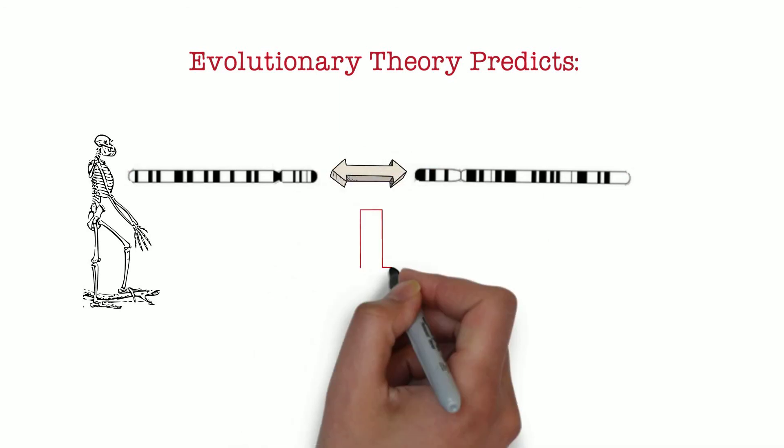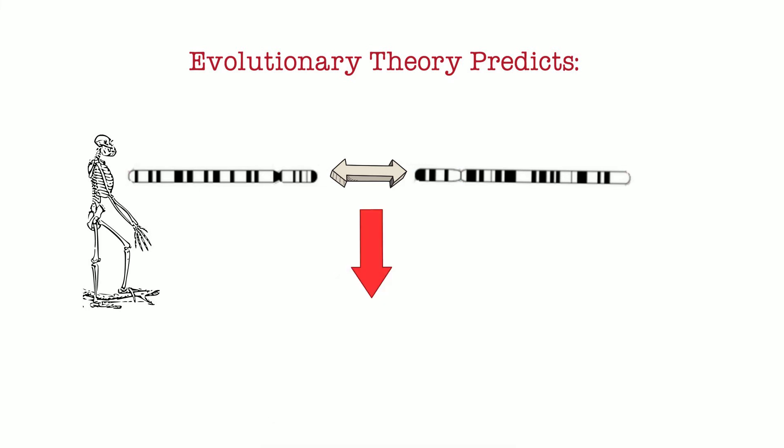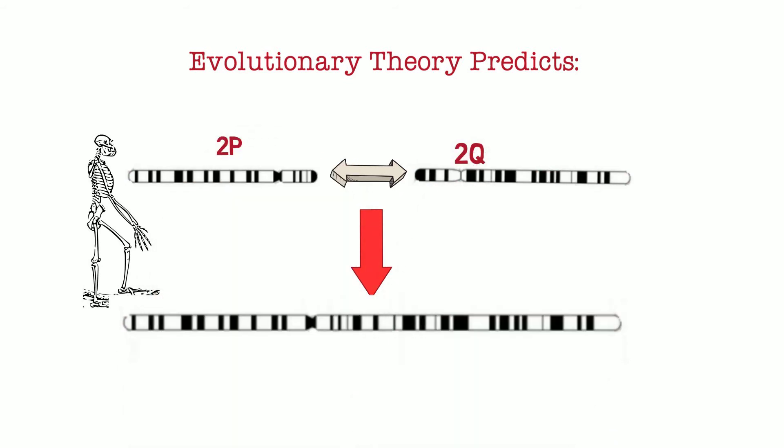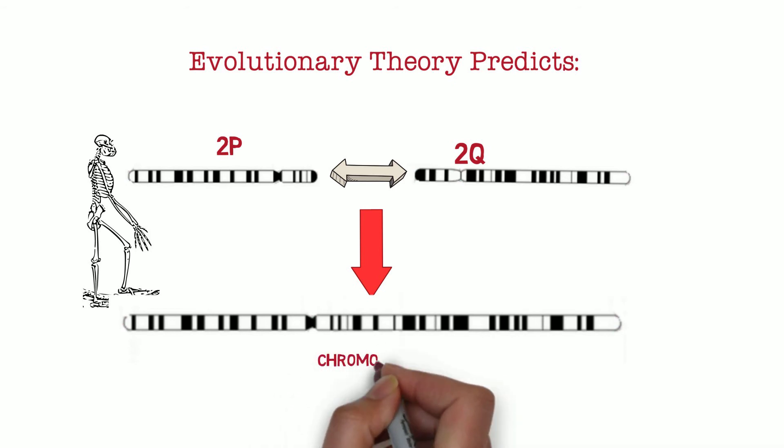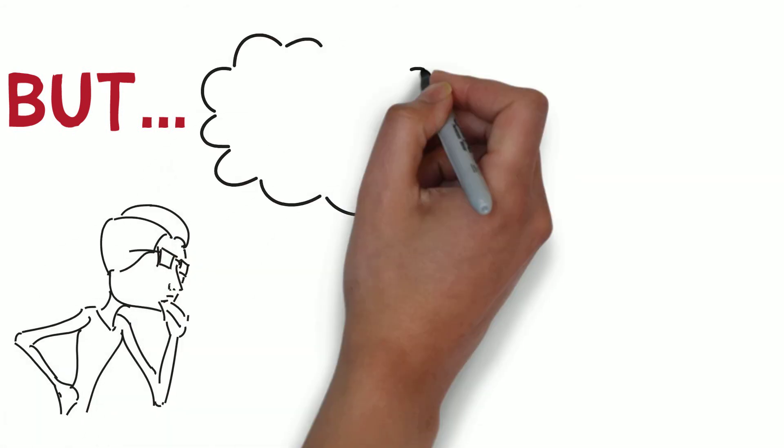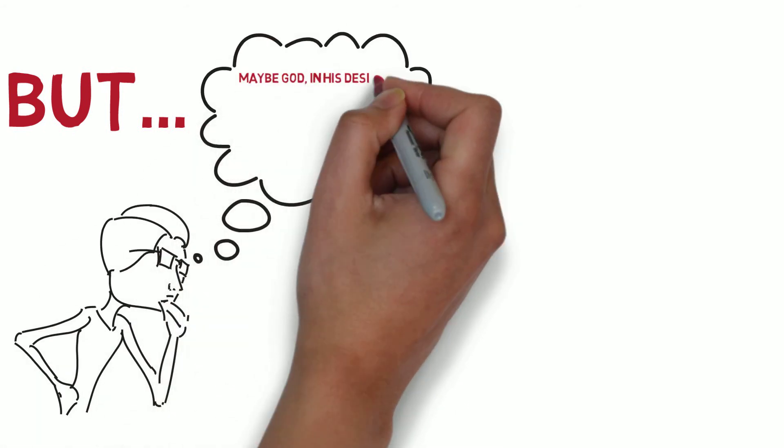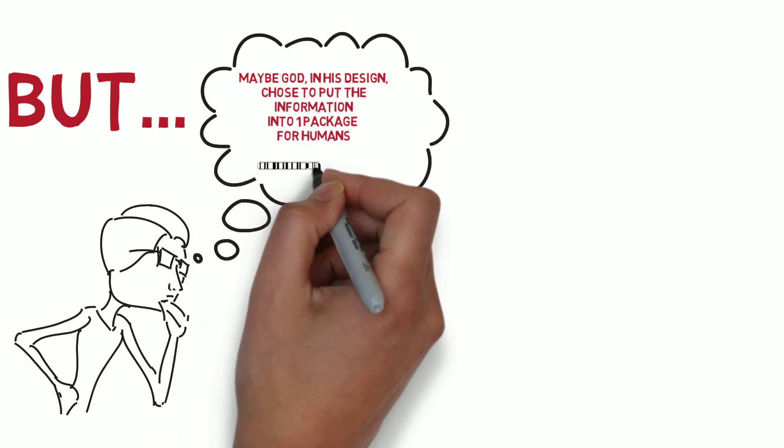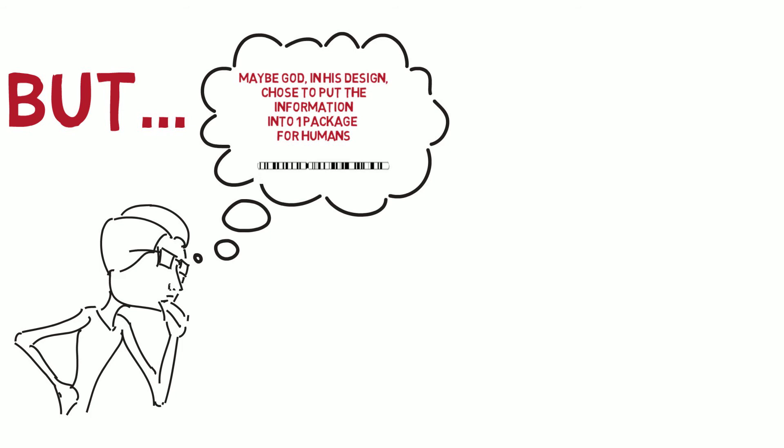We know that chromosomes fuse sometimes. Indeed, about one out of every thousand children are born with a newly fused chromosome. So evolutionary theory predicts that in an ancient ancestor, chromosome 2P became fused to chromosome 2Q, to become what we now call chromosome 2. This, of course, doesn't prove common descent from an ancestor that we share with great apes. It could be that God, in his design of human beings, chose to put the information into one package for humans, rather than two packages that were used for great apes.